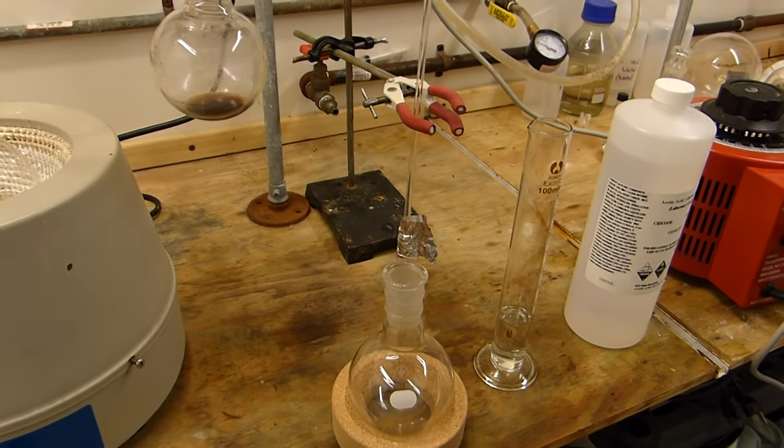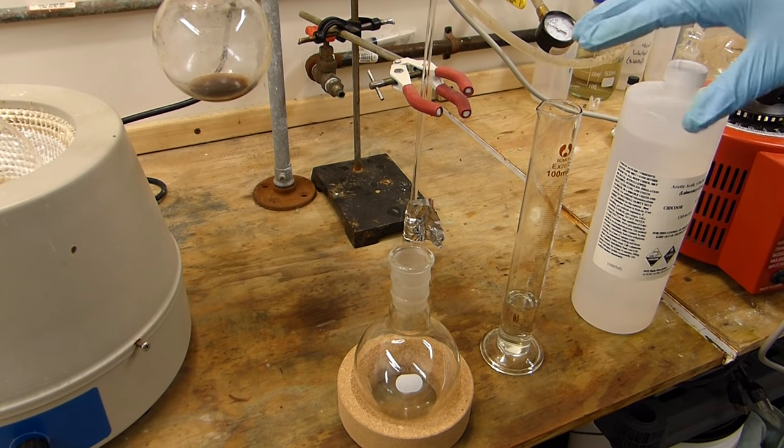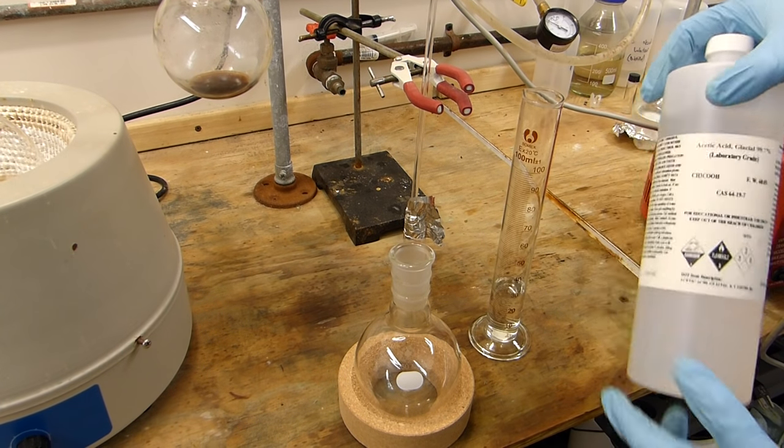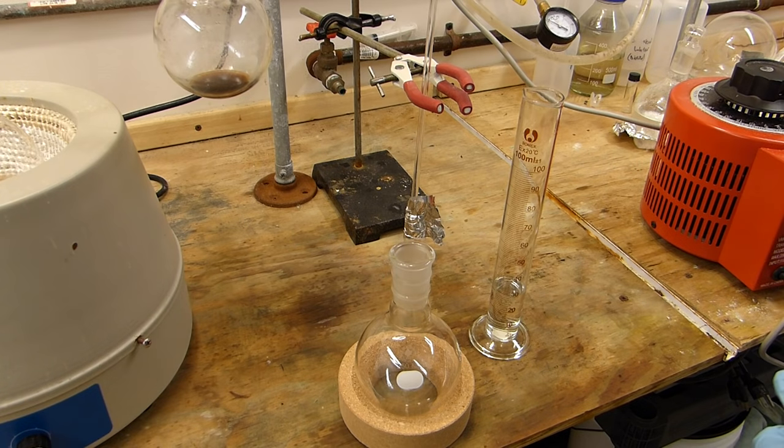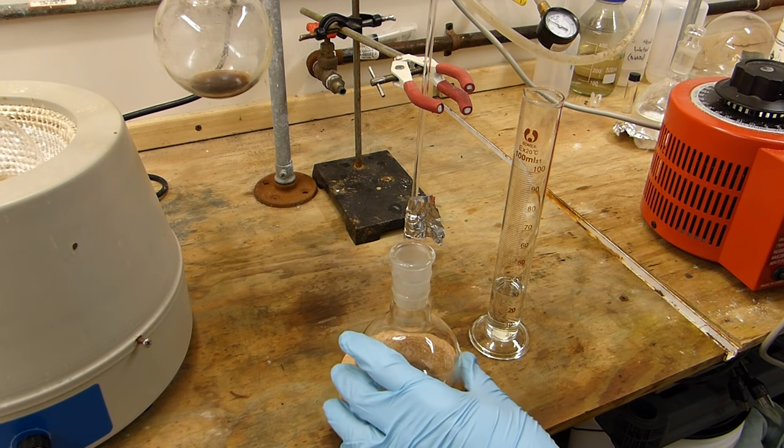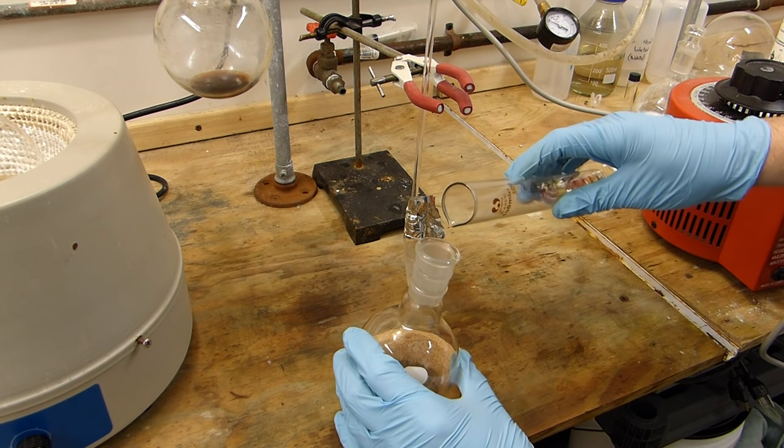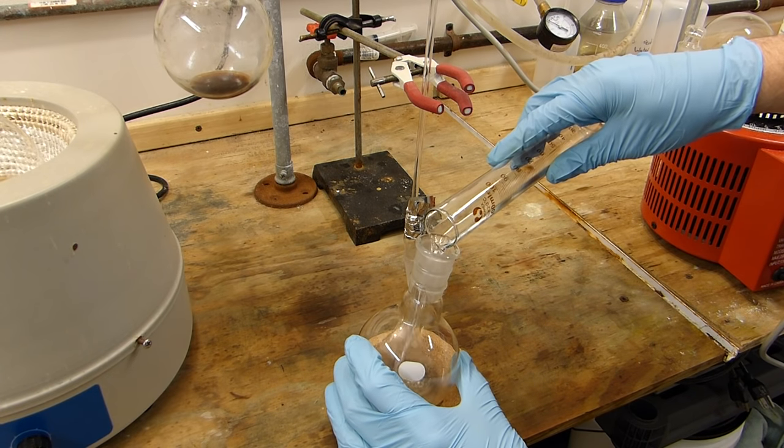But first, we'll set up the absorption flask over here. I've weighed out 30.9 grams of commercial glacial acetic acid, which is sort of essential for reasons I mentioned before, how starting from water is kind of a pain unless you do a distillation in the middle.